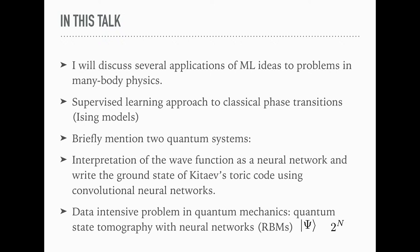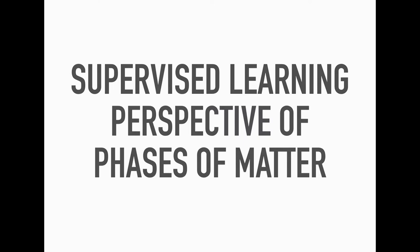I'll discuss some applications of machine learning in many body physics. One is a supervised learning approach to classical phase transitions in Ising models. That's the simplest thing that I started with. Let me briefly mention two quantum systems: the interpretation of the wave function as a neural network, where we write down the ground state of the toric code using convolutional neural networks. And finally, very briefly, data-intensive problem in quantum mechanics, which is that of quantum state tomography using neural networks.